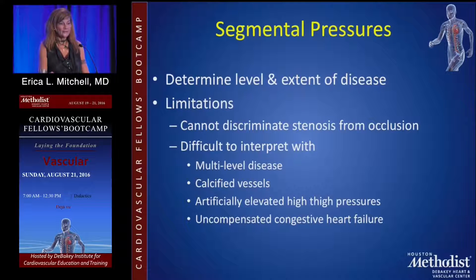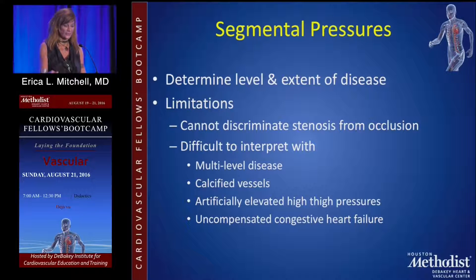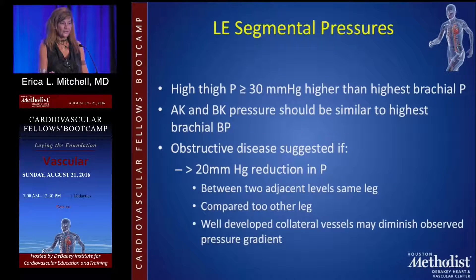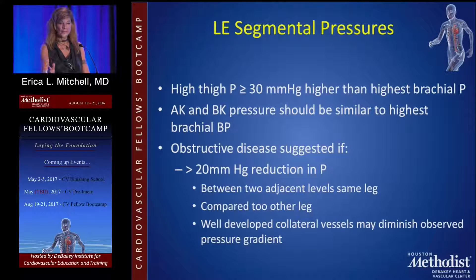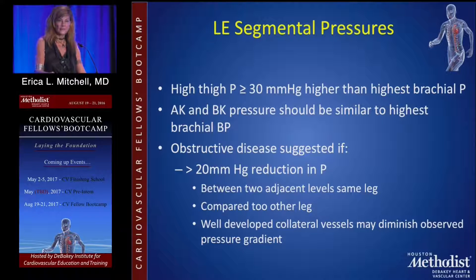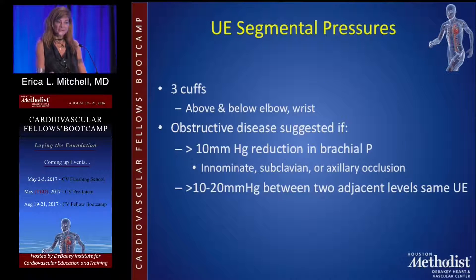Segmental pressures determine the level and extent of disease but are limited — they cannot define occlusion versus stenosis and are difficult to interpret with multilevel disease. We use a four-cuff technique with the patient supine, measuring pressures at the high thigh, above the knee, below the knee, and at the ankle. A drop of more than 30 mmHg between levels is significant for an ipsilateral lesion; a difference between right and left sides indicates a contralateral lesion. The high thigh pressure should be more than 30 mmHg above arm pressure, and above-knee and below-knee pressures should approximate arm pressure.